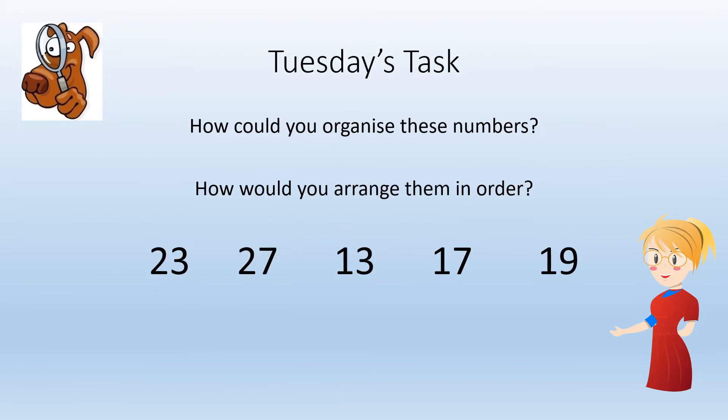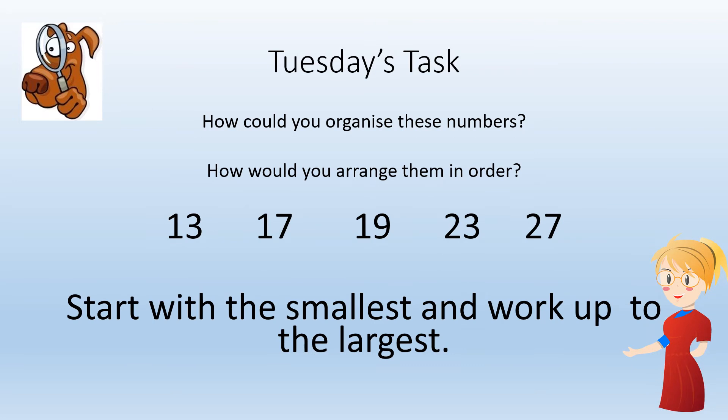Tuesday's task. How could you organize these numbers? How would you arrange them in order? We have 23, 27, 13, 17 and 19. Start with the smallest number and work up to the largest. So you would have 13, 17, 19, 23 and then 27.